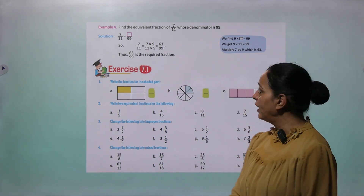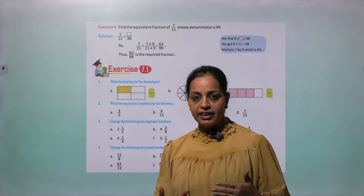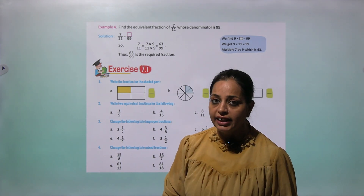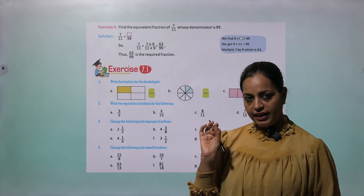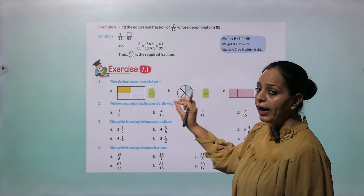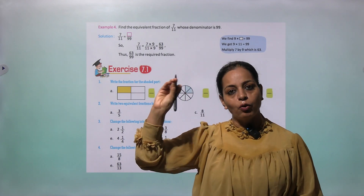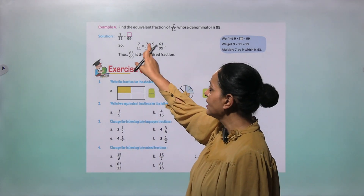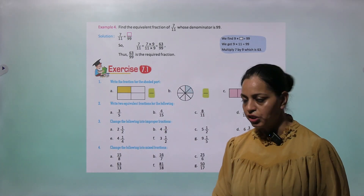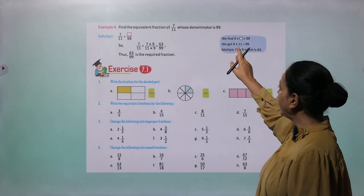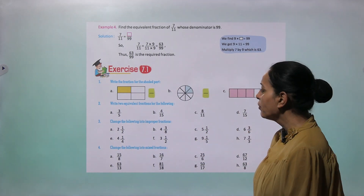Find the equivalent fraction of 7 by 11 with denominator 99. We need to find how 11 becomes 99 — 11 into 9 equals 99. The rule is: if you multiply the denominator by 9, you must also multiply the numerator by 9. So 7 into 9 equals 63. The required fraction is 63 by 99. Exercise 7.1 is given — you can try it.